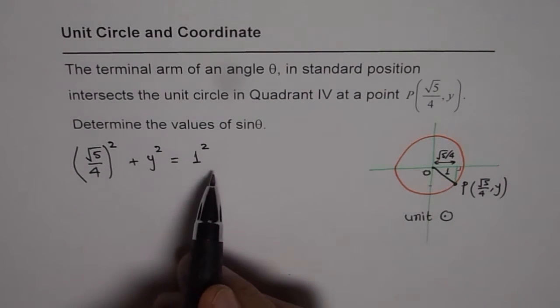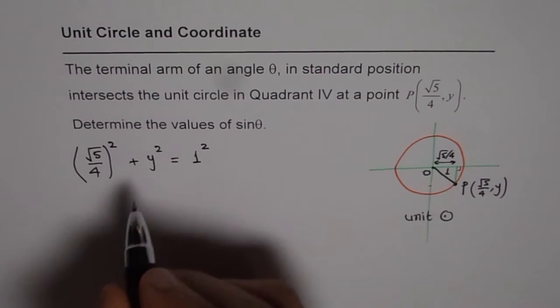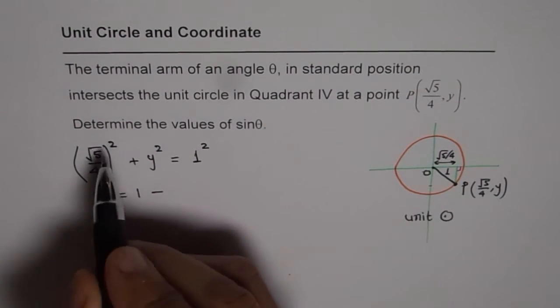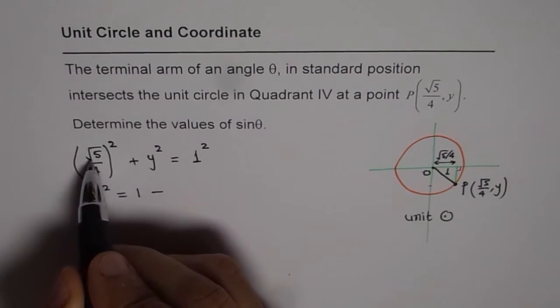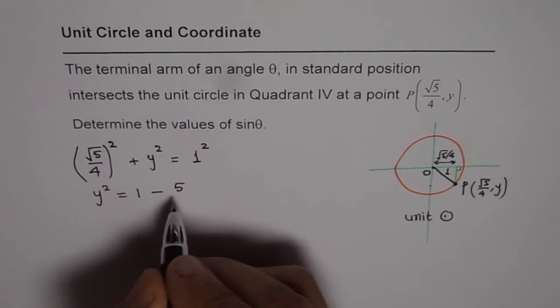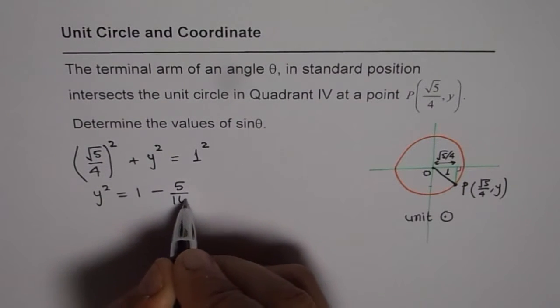Let's bring these terms to the right side and solve it. So we have y square equals to 1 minus. Now when you do square root 5 square you get 5 and 4 square is 16. So you get 5 over 16.